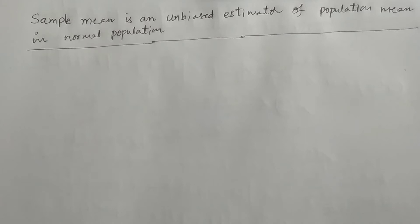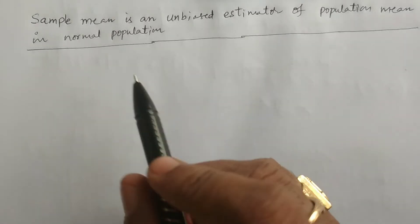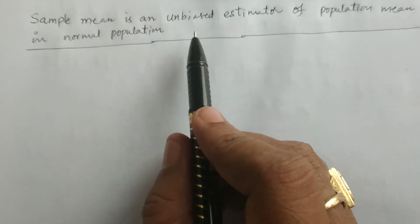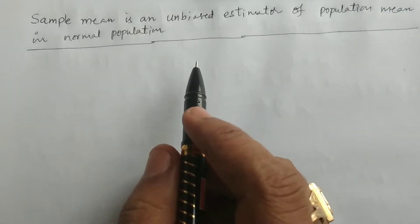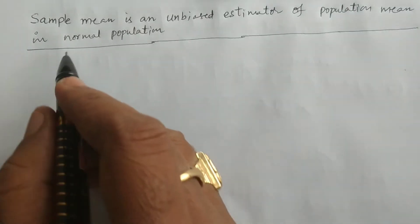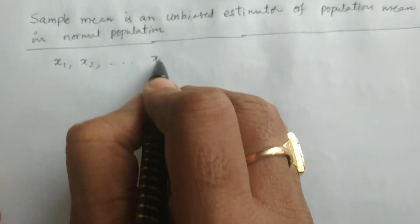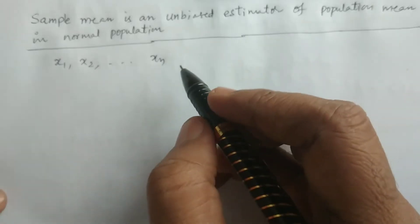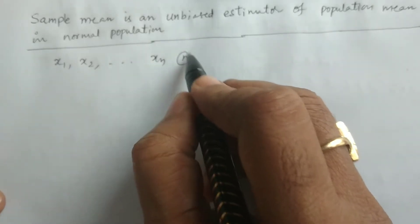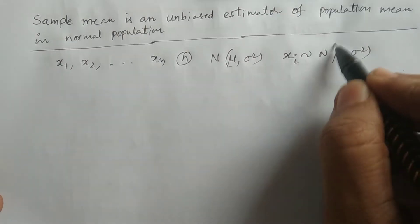Welcome to BSE statistics students. In this lesson I explain that the sample mean is an unbiased estimator of the population mean in a normal population. We consider a random sample x1, x2, and so on xn of size n drawn from a normal population with mean mu and variance sigma square. That is, xi follows a normal distribution with mean mu and variance sigma square.